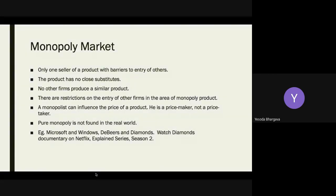It is not ideally possible to have a monopoly market — even though Jio has a substantial number of users in the Indian market, other operators like Airtel or Vodafone Idea exist. The advantage of being a monopoly is that you can influence the price of a product, and if people really need it, they will pay. The company is the price maker, not a price taker — whereas in perfect competition, sellers are price takers.